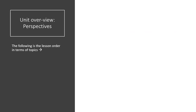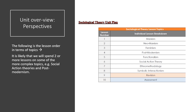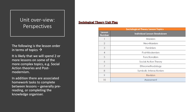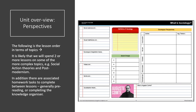The following is the lesson order in terms of topics. It's likely we'll spend two or more lessons on some of the more complex topics — for example, Social Action Theories and Postmodernism. In addition, there are associated homework tasks to complete between lessons, generally pre-reading or completing the Knowledge Organiser. Here's the task list — you can see that task one goes with lesson number one. And here's a shot from the Knowledge Organiser, which will be given to you in a paper copy. Your job will be to complete it based upon the lesson materials, your textbook, and a help guide.